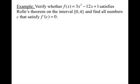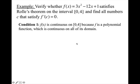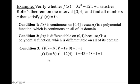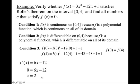Verify that f(x) = 3x² − 12x + 1 satisfies Rolle's theorem on [0,4] and find all c where f′(c) = 0. Condition 1: continuous — it's a polynomial. Condition 2: differentiable — it's a polynomial. Condition 3: plug in 0 and 4; both give a y-value of 1, so f(0) equals f(4). Now find the derivative, set it equal to zero, and solve: x equals 2. At x equals 2, there is a horizontal tangent line parallel to the secant line at the endpoints.